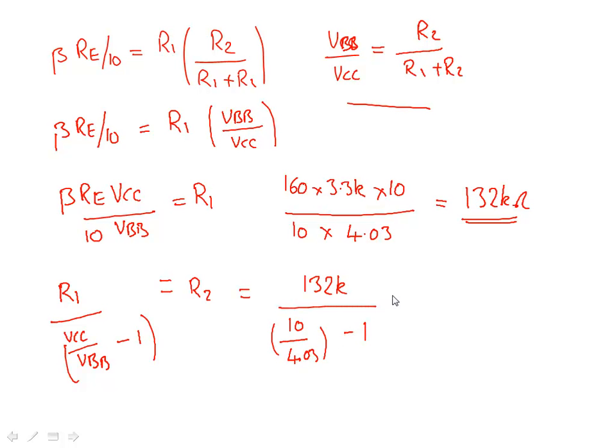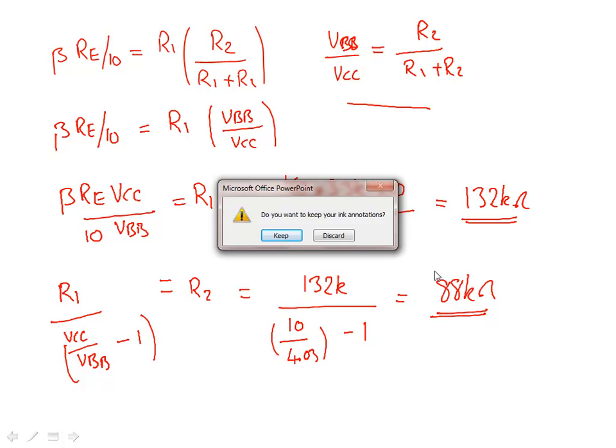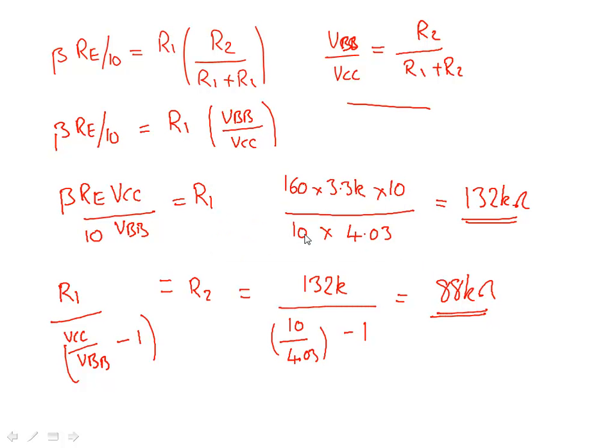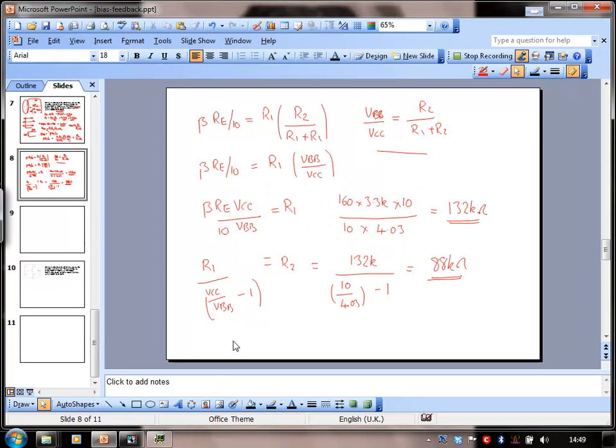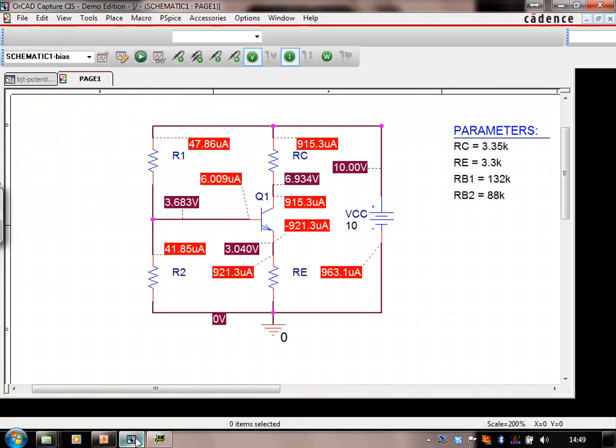Now what you've done there is you followed the textbook method and you've used the simplification over here that the base resistance should equal beta RE over 10. So what I'm going to do, I'll just come out of this software tool, keep those annotations, I'm going to continue recording and let's just have a quick look at OrCAD.